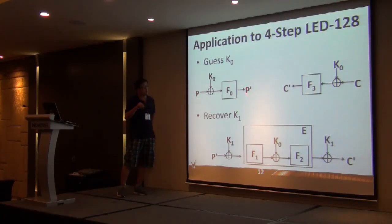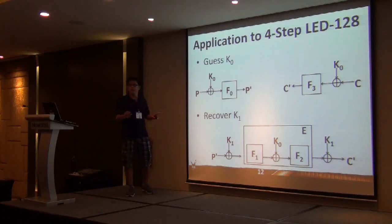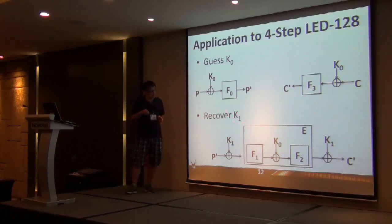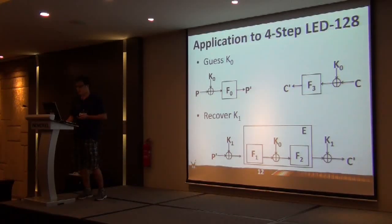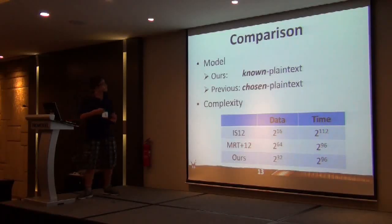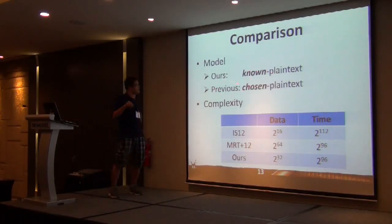How can we apply this to LED-128 version? You can see, first you guess the key here. Then from the plaintext P, you can compute backward from C to C prime. Then you peel off F0 and F3. Let's look at what remains. For the internal F1, F2, K0, you know it's a public permutation, which I denote E. So now we can recover K1 by SLIDEX attack. This is exactly how you can apply the SLIDEX attack.